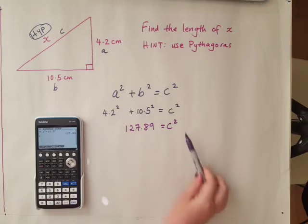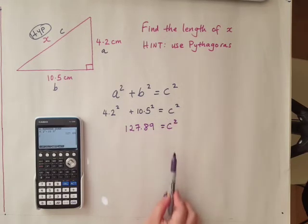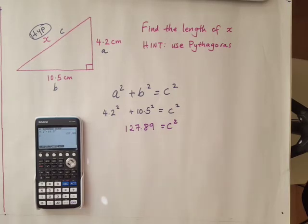In every step I'm going to copy down the right hand side. Equals C squared. Notice my equal signs are all lined up and there's only one equal sign per line.